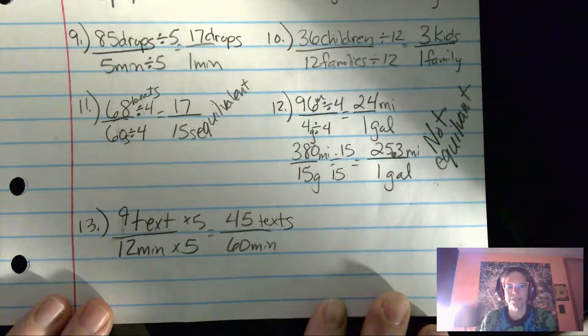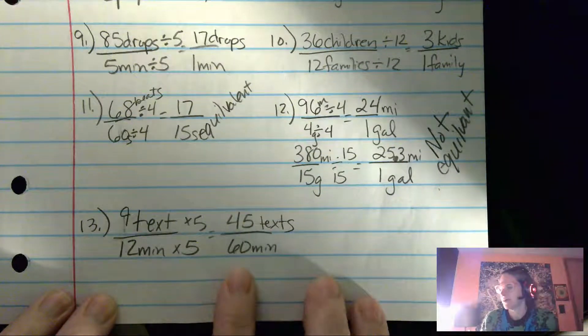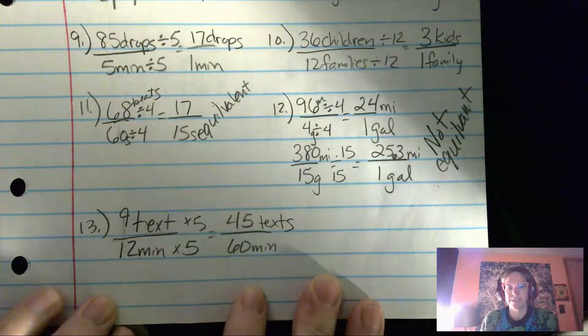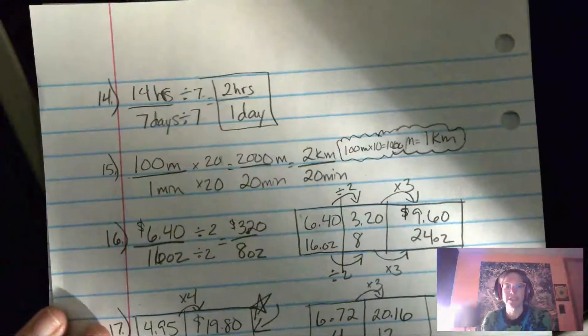Number 13 averages out to 45 texts per 60 minutes, which is 45 texts per hour. Number 14 is two hours per day.